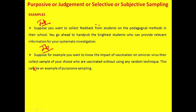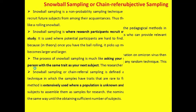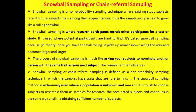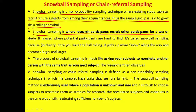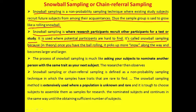Snowball sampling, also called chain referral sampling, is a non-probability technique where existing subjects recruit future subjects from among their acquaintances. Thus the sample group grows like a rolling snowball. Research participants recruit other participants for a study, and it is used where potential participants are hard to find. Once the ball is rolling, it picks up more participants along the way and becomes larger and larger.